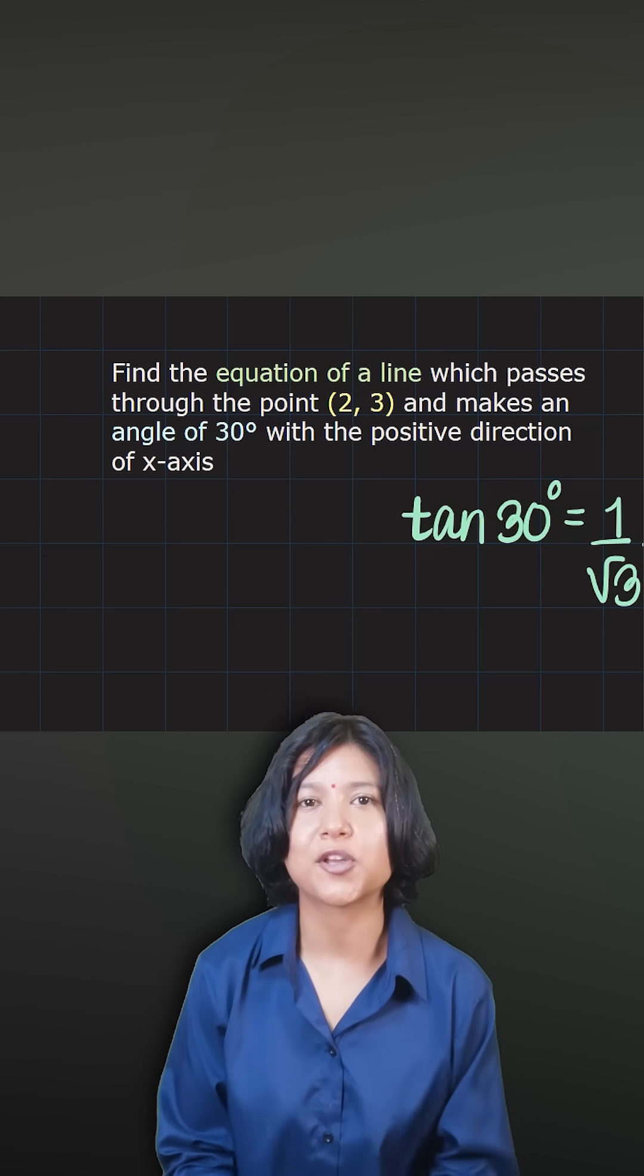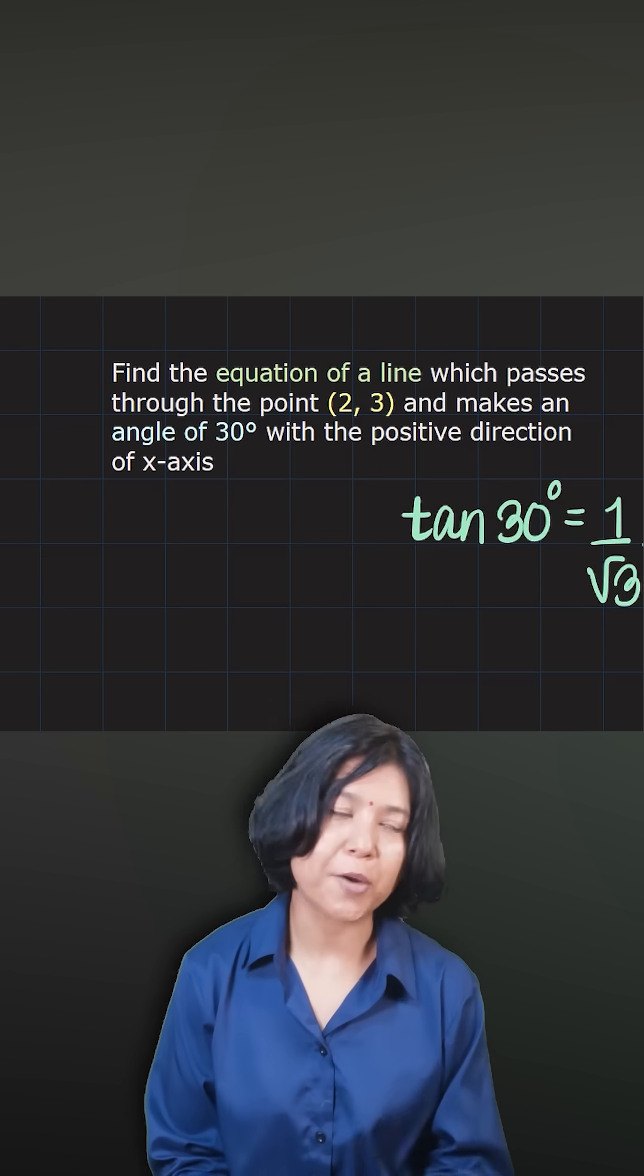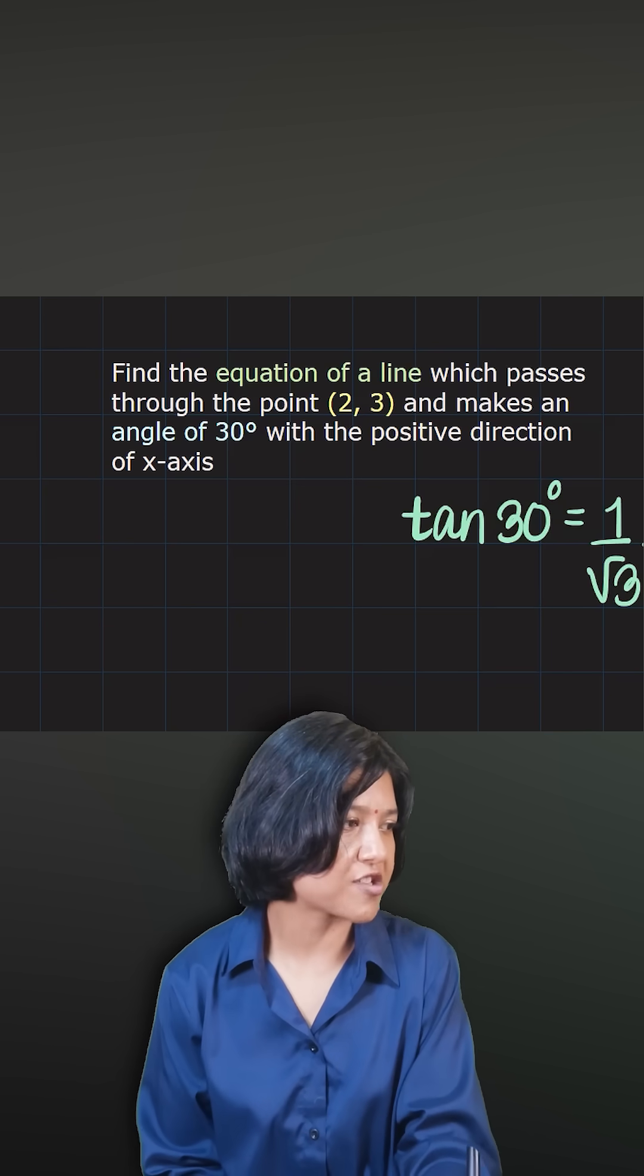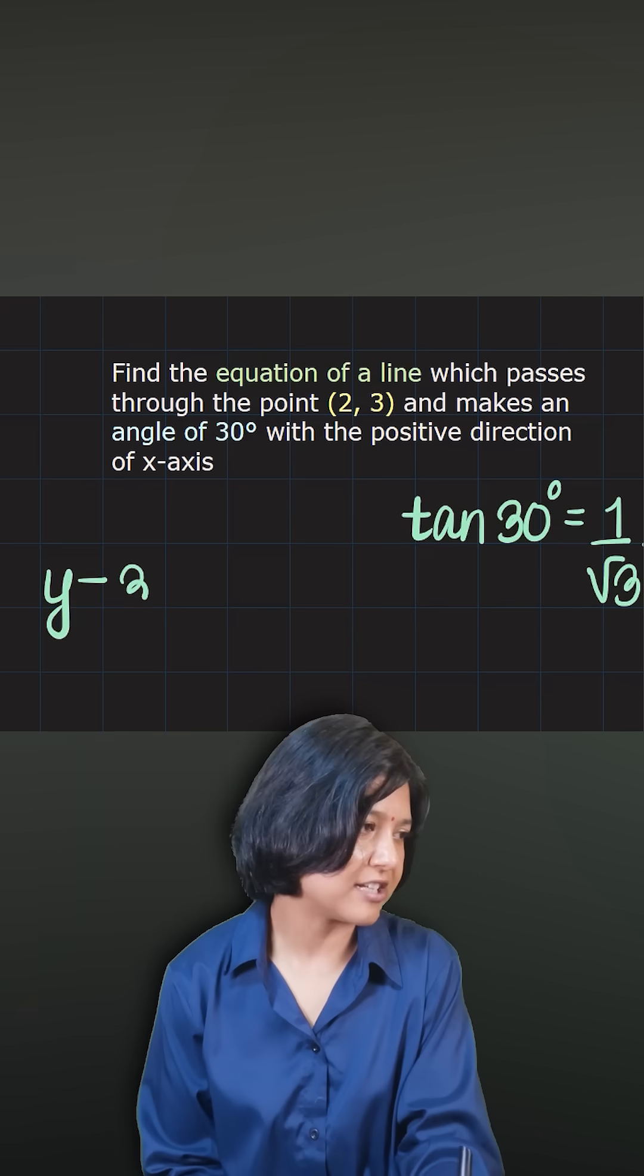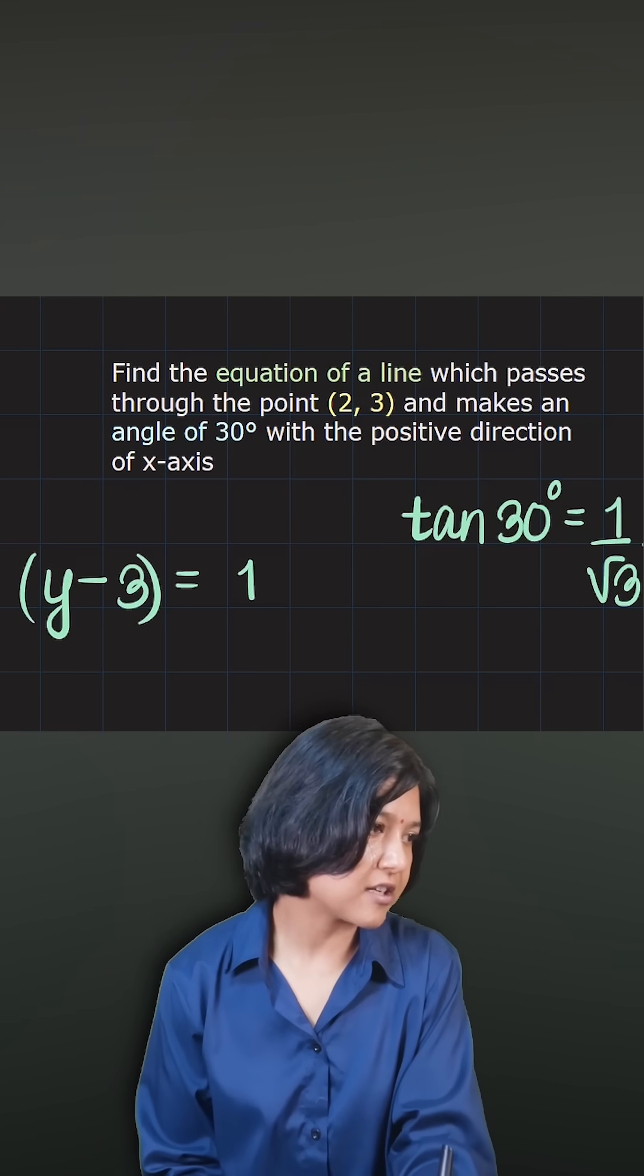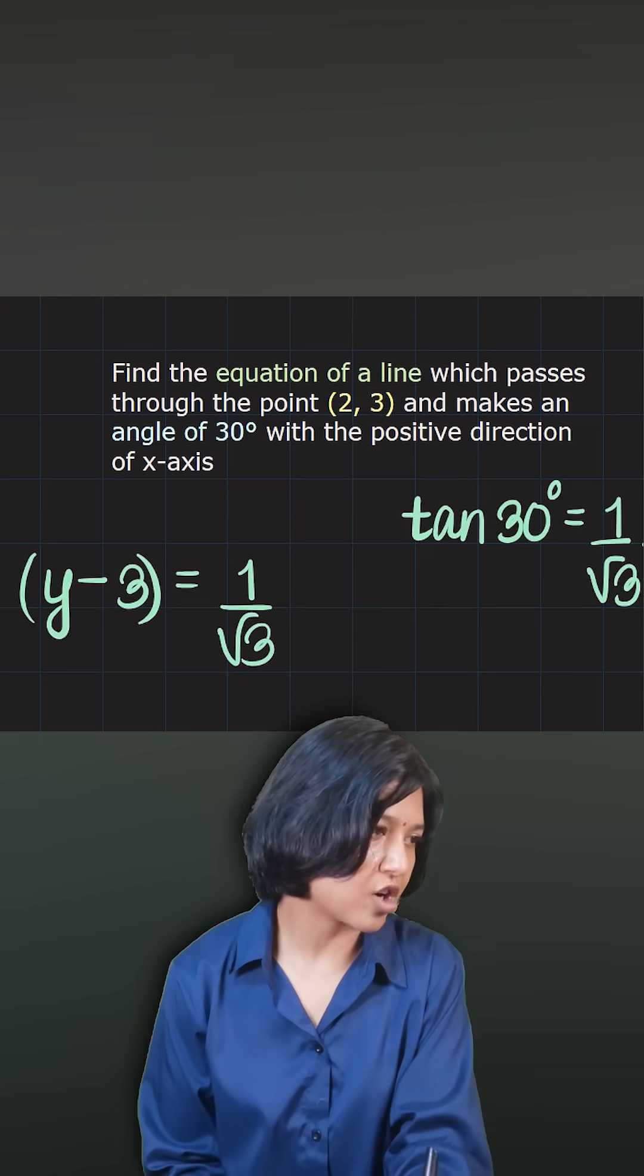To write the equation, we just write y minus the y-coordinate equals to the gradient times x minus the x-coordinate. This is it.